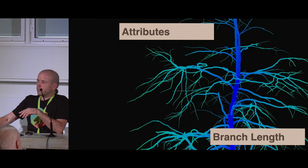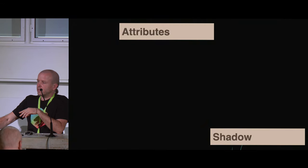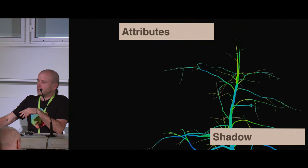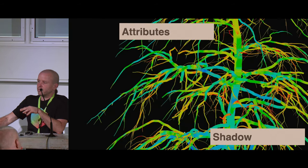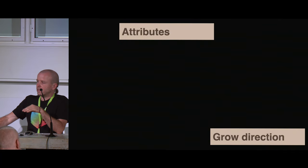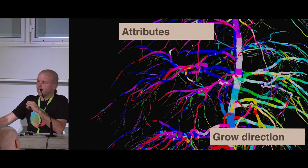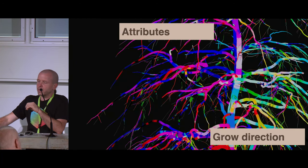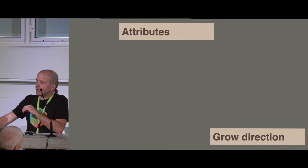Here you can see branch level from the trunk, and the shadow calculation I mentioned. In the simulation, branches are removed dynamically. This is the grow direction calculated from the light calculation — it looks wild because it's a vector, with XYZ written to colors.